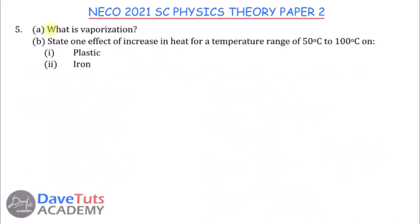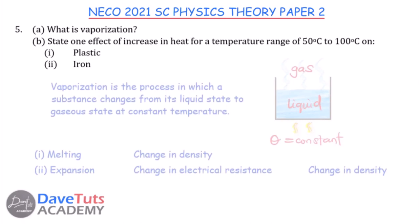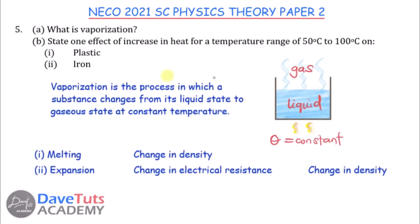Vaporization is the process in which a substance changes from its liquid state to gaseous state at constant temperature. Students, I cannot emphasize enough that it must be at constant temperature — that is what will earn you your format marks. Don't just say it changes from liquid to gaseous; the constant temperature must come in.